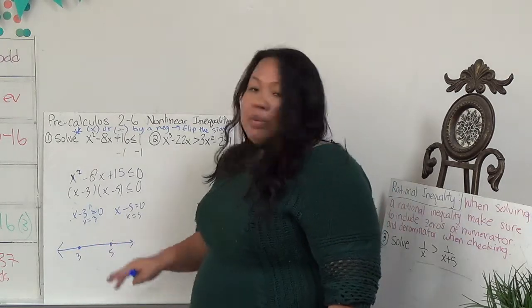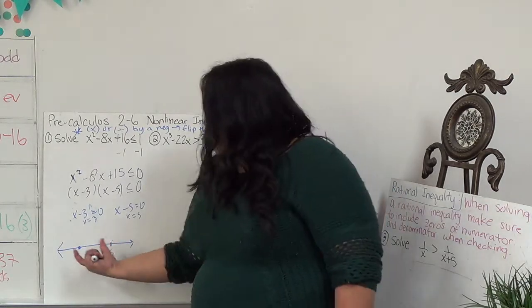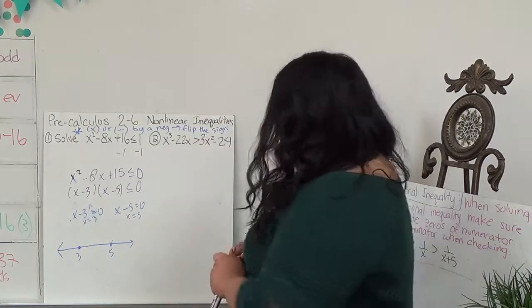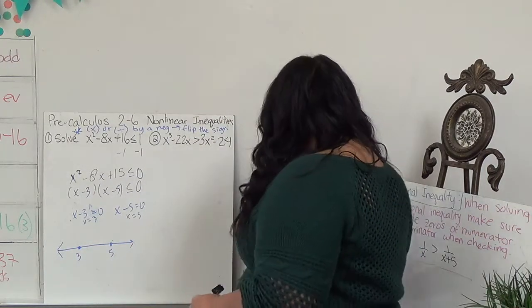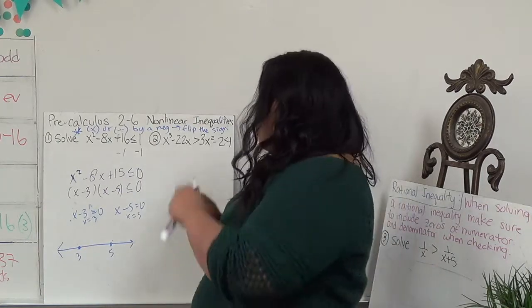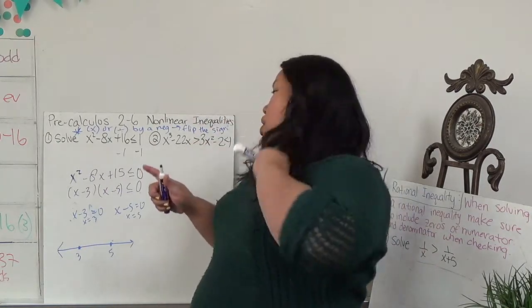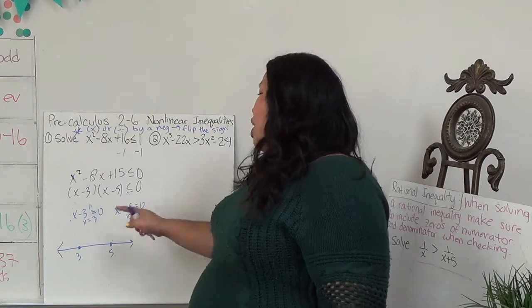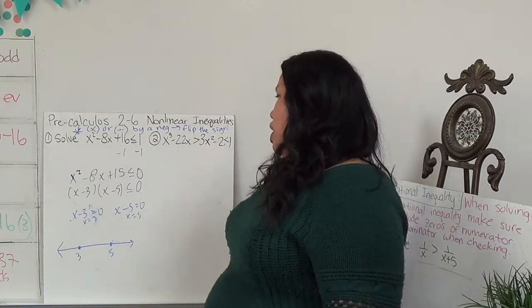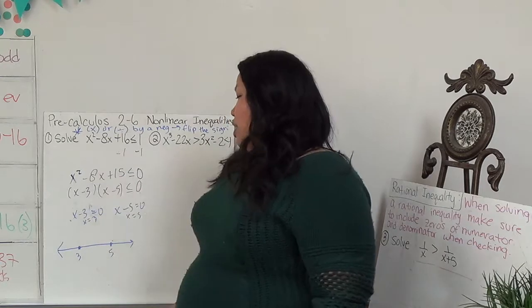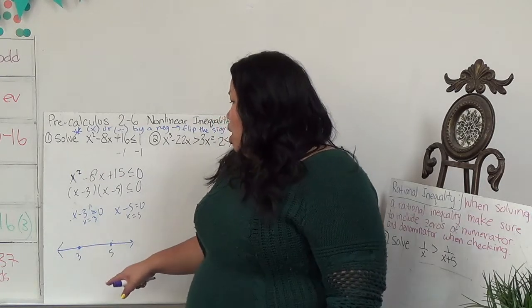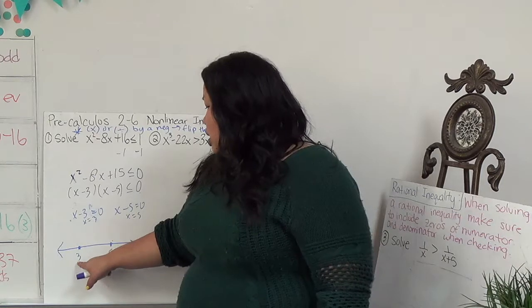These markers of 3 and 5 break my timeline into three parts: anything less than 3, things between 3 and 5, and things larger than 5. All, none, or some of these portions of the number line are going to fit, and I need to know which ones. I just need to figure out which ones give me negatives, because anything less than 0 is negative.